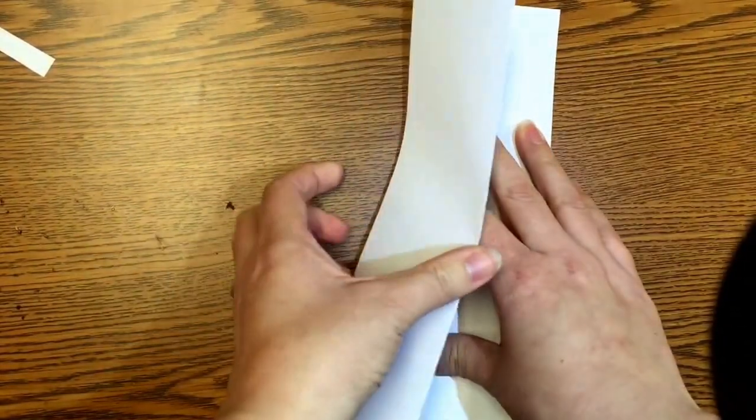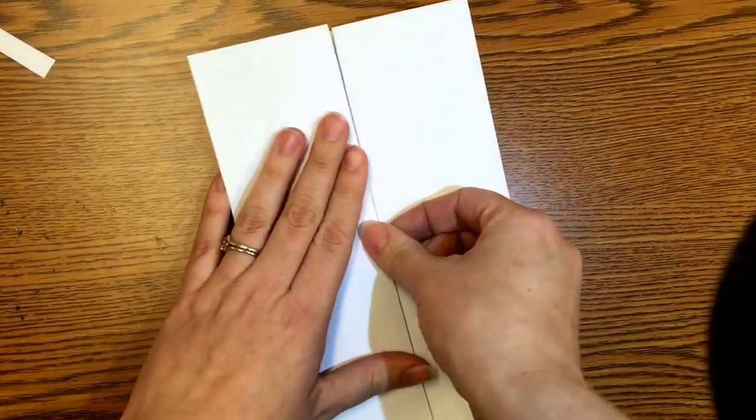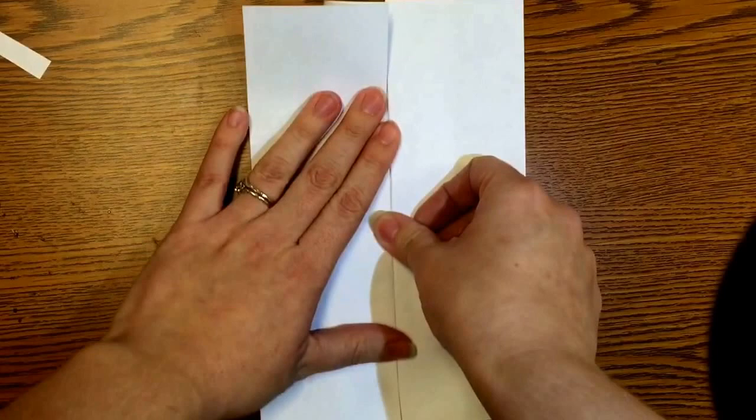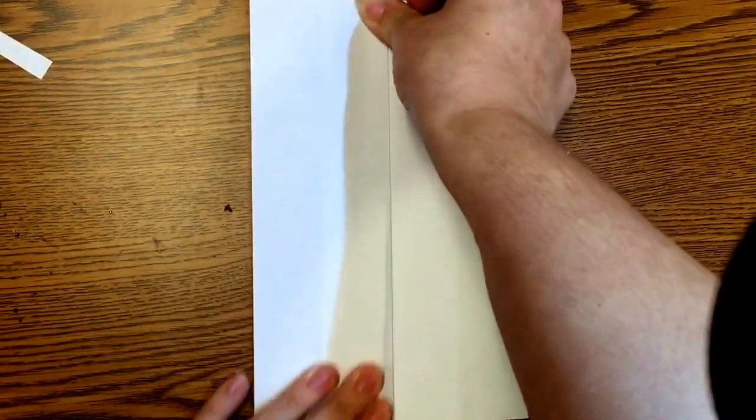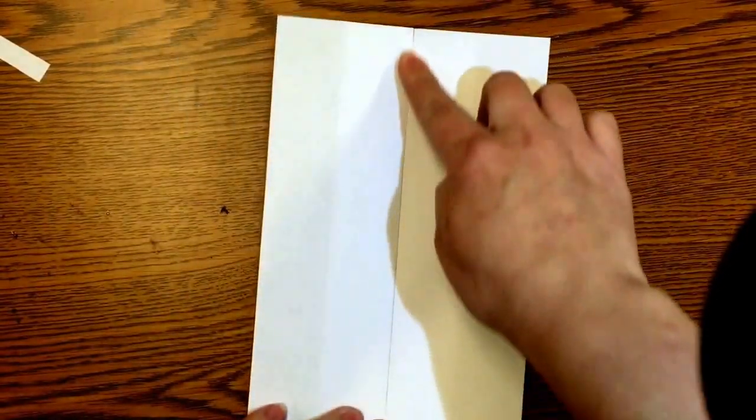I'm going to take the folded edge. I'm going to leave this part out free. And fold that in to that middle crease. And voila! You have an accordion fold book.